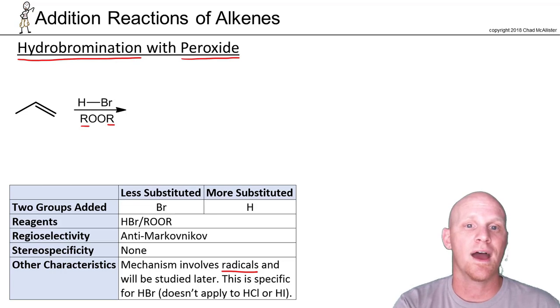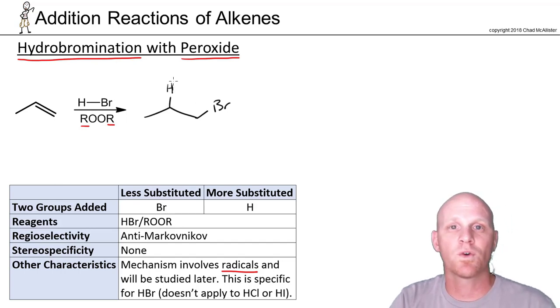The net result is we're going to add H and Br anti-Markovnikov. The bromine is actually going to end up on the less-substituted side, and the hydrogen on the more-substituted side. Now, this mechanism, we're not going to actually study it now. This is a little beyond us where we're at, but we will study it in a future chapter involving radical reactions.